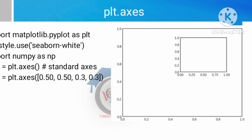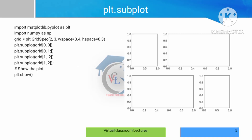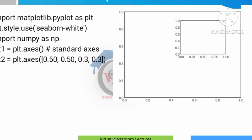The second axes uses values 0.5, 0.5, 0.3, and 0.3. So 0.5 is the bottom — the plotting starts at 0.5. Left is also 0.5, so the plotting starts at that position. Next, 0.3 and 0.3 are the height and width respectively. Height is 0.3 and width is 0.3 for the subplot. Using this line of code you can create one subplot inside the main plot.